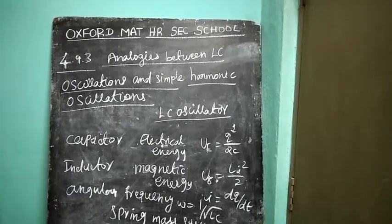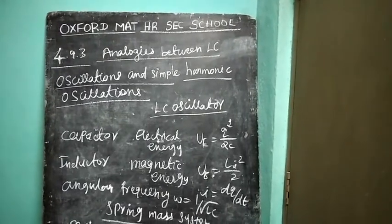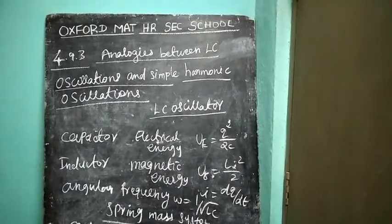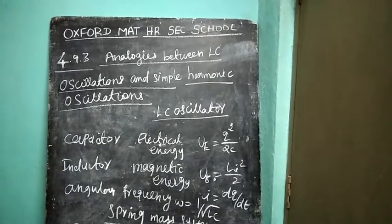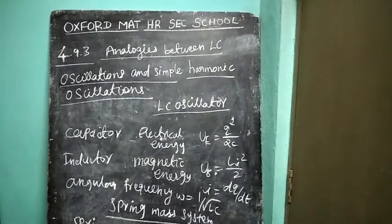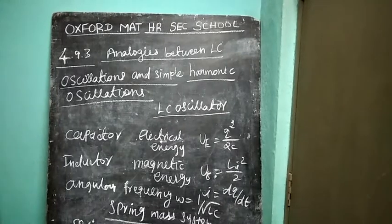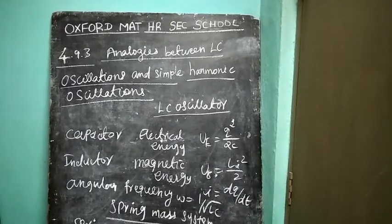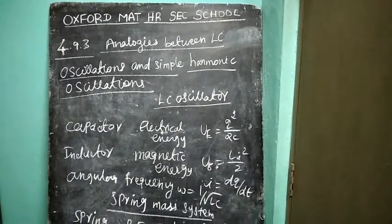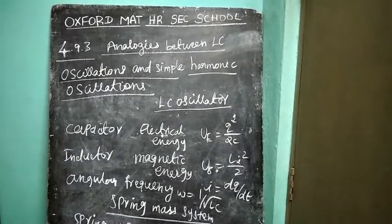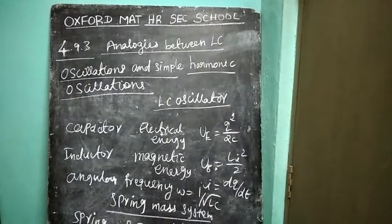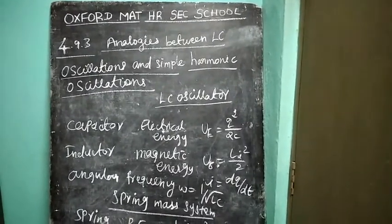Here I is current, where current I equals dQ by dt. Total energy of the LC oscillator — that is, electromagnetic energy — equals the sum of electric energy in the capacitor and magnetic energy in the inductor: Q squared by 2C plus L times I squared by 2.